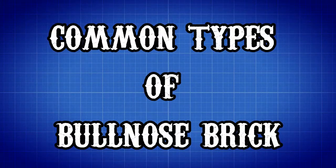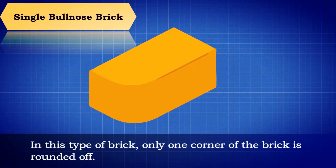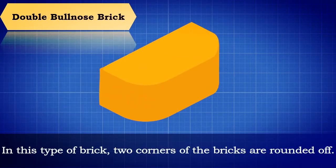Let us now see the common types of bullnose bricks. Single bullnose brick: in this type of brick, only one corner of the brick is rounded off. Double bullnose brick: in this type of brick, two corners of the brick are rounded off.